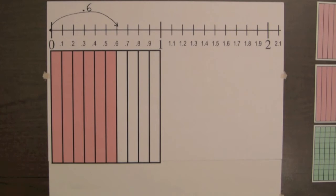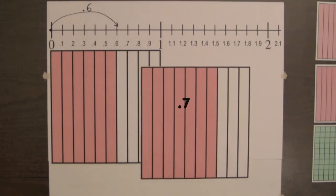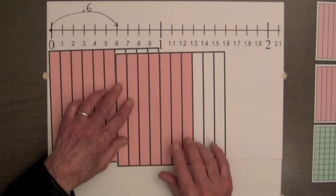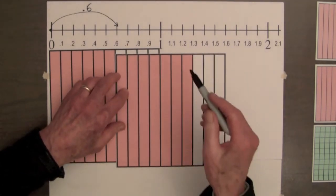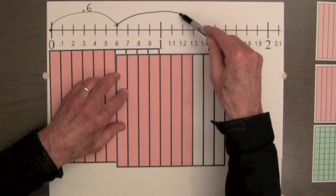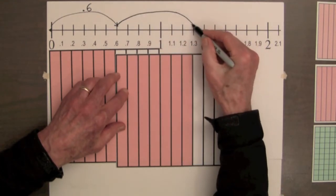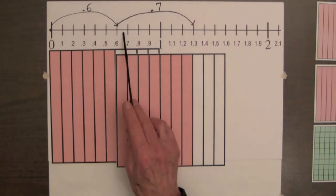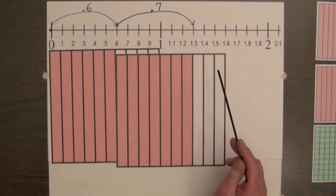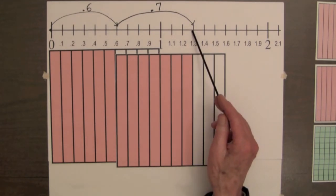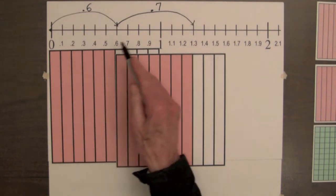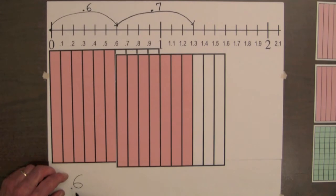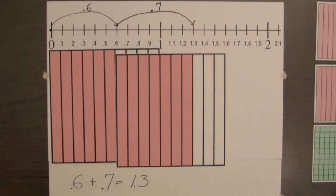If J continues seven-tenths of a mile further and stops at an abandoned mine, we can place a square representing seven-tenths next to the shaded amount of the six-tenths, and mark J's progress on the number line — counting seven more tenths to the point one and three-tenths. We can represent the total length J has hiked by an addition equation: six-tenths plus seven-tenths equals one and three-tenths miles.